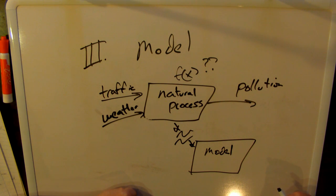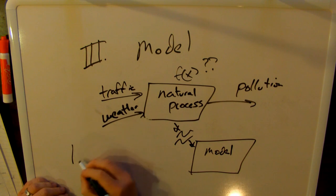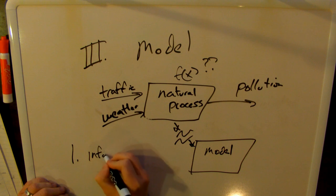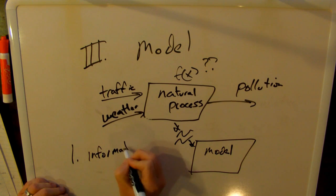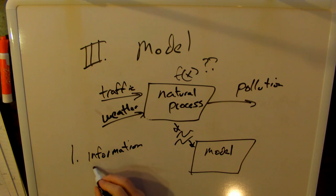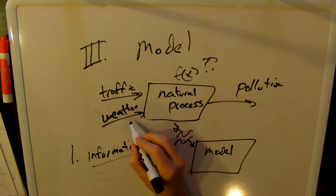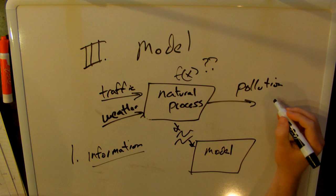So why would we do that, though? There's two reasons we would do that. The first reason we would do that is information. And when I say information, what I mean is we want to extract some information from this approximated model that helps us understand the relationship between these things that are going in, traffic and weather, and pollution, which is coming out.